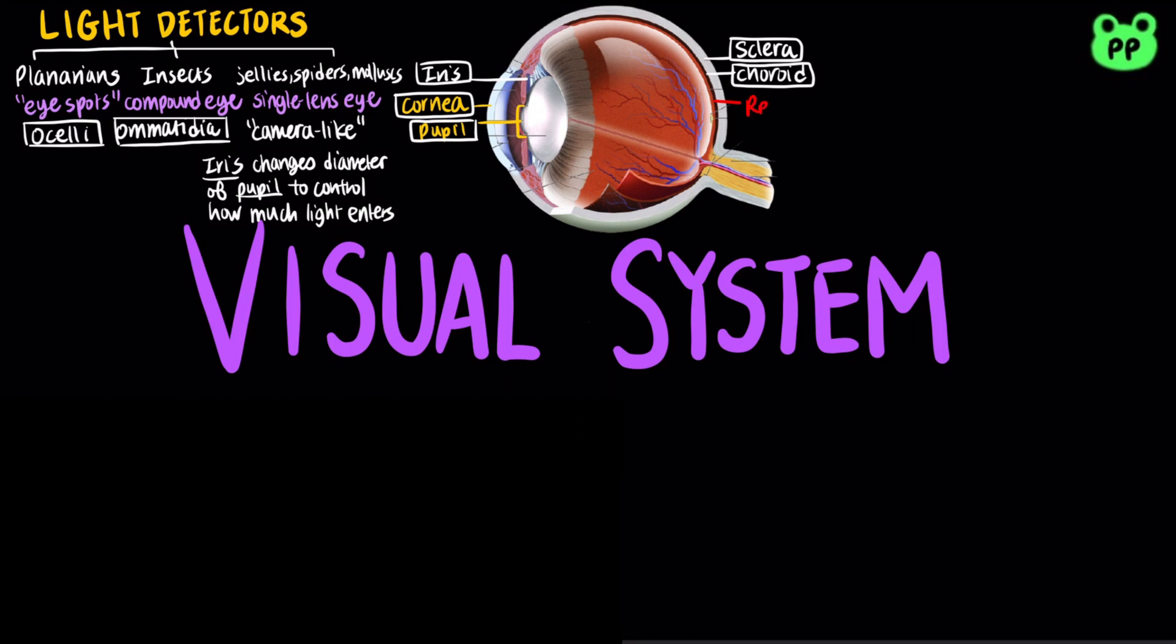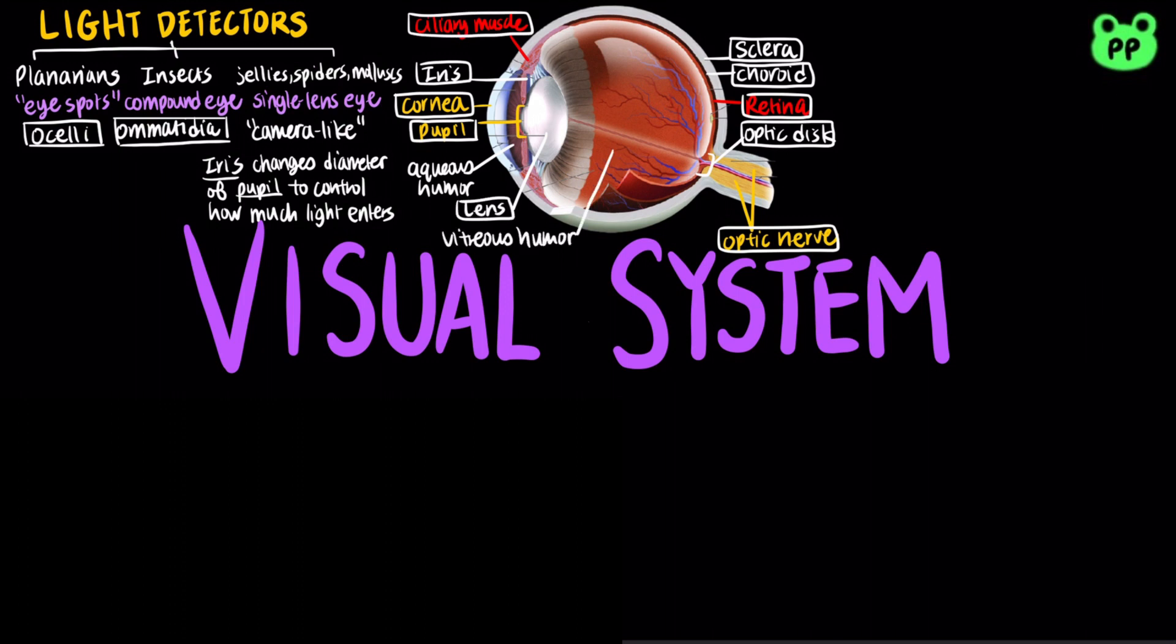The layer inside the choroid is the retina, which contains photoreceptors. The optic disc is a blind spot in the retina where the optic nerve attaches to the eye. The lens is a transparent disc of protein that focuses light on the retina. The eye is divided into two cavities separated by the lens and ciliary body. The anterior cavity is filled with watery aqueous humor, which is produced by the ciliary body, while the posterior cavity is filled with jelly-like vitreous humor.